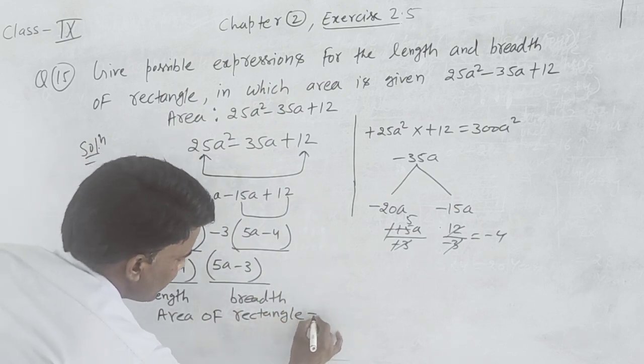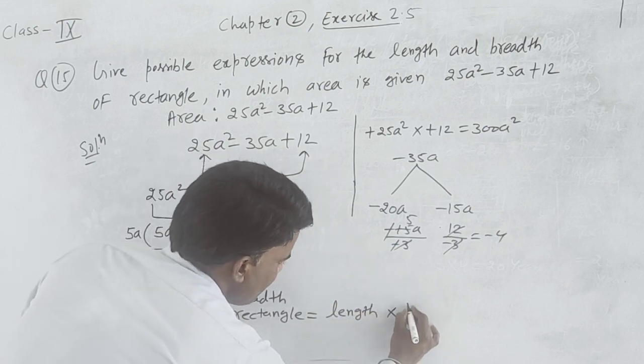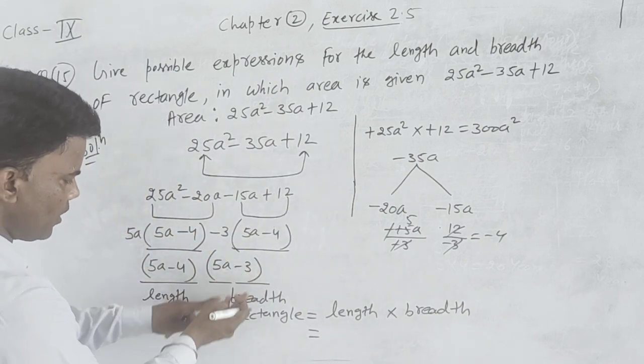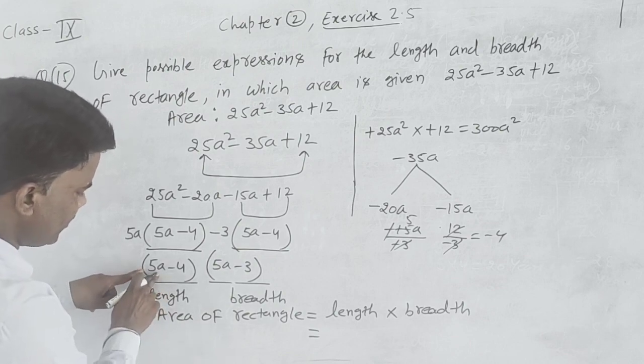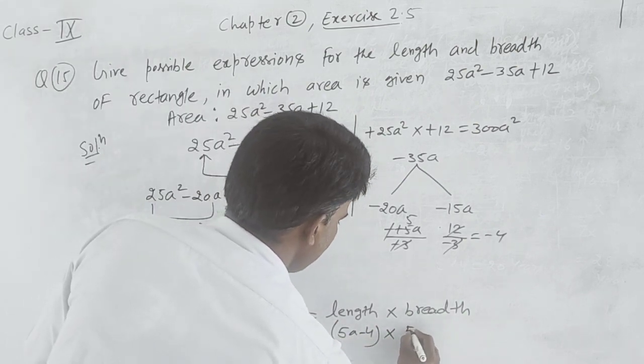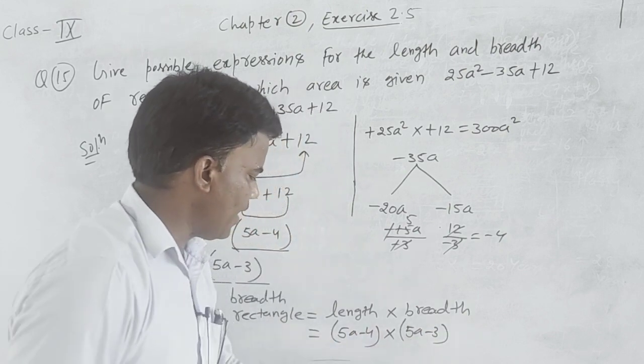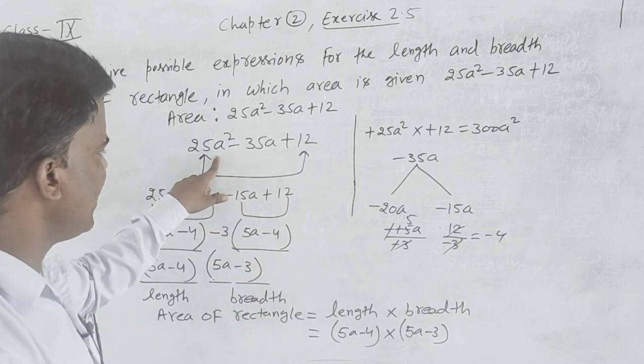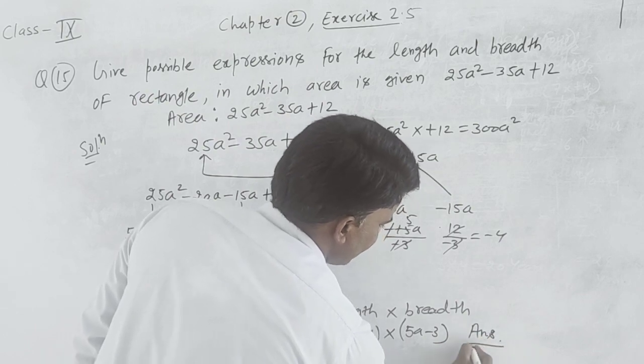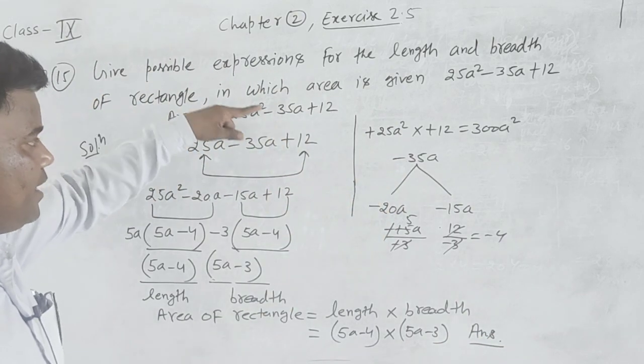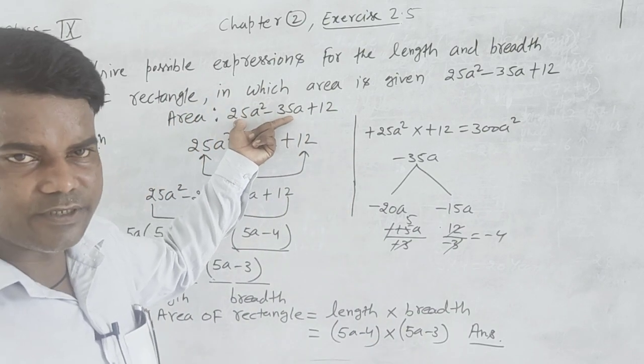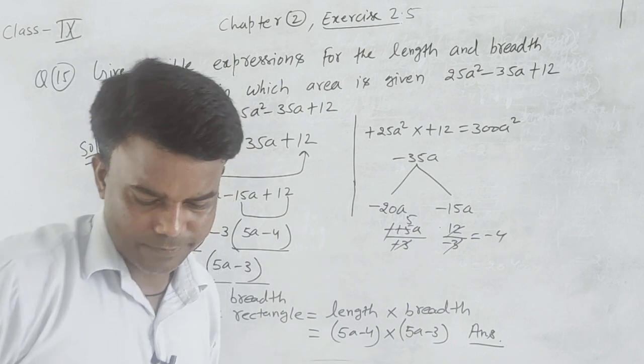Length can be 5a minus 4 and breadth can be 5a minus 3. When you multiply length into breadth, the result is 25a square minus 35a plus 12. That is the answer. When you have area given in quadratic equation form, factor it to find length and breadth. Thank you.